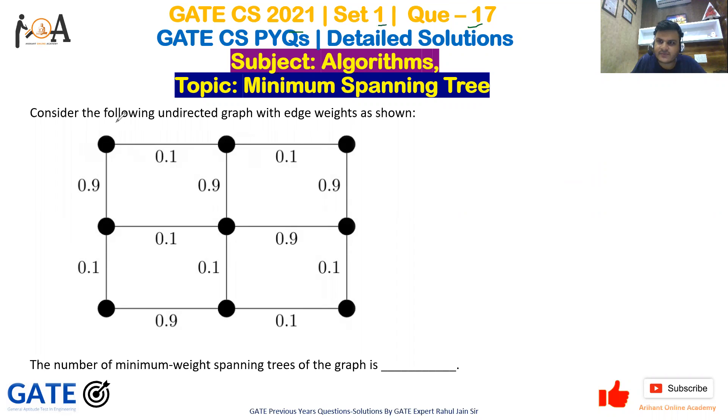The question is as follows: consider the following undirected graph with edge weights as shown. We have a complete undirected graph, and the number of minimum weight spanning trees of the graph is what we need to find.